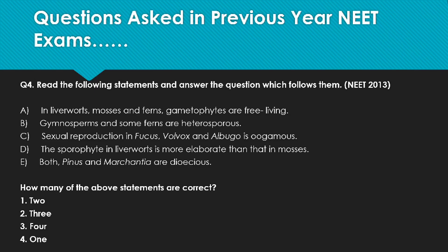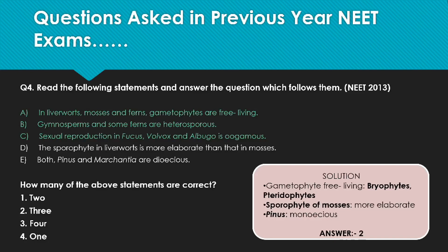So we have three correct statements: A, B, and C. If the question asks how many of the above statements are correct, the correct option is the second one — that is, three statements A, B, and C are correct.